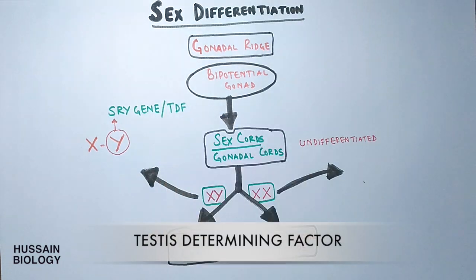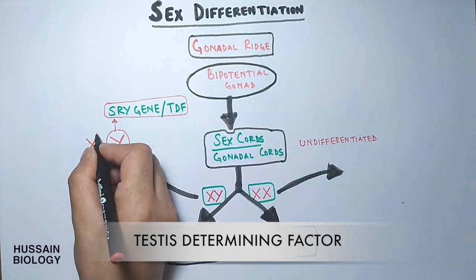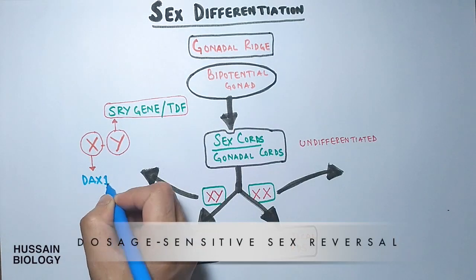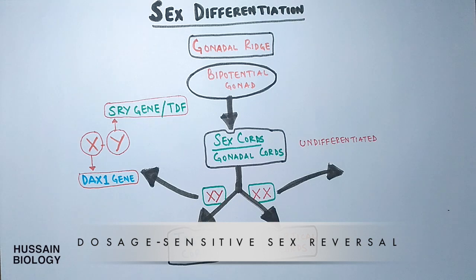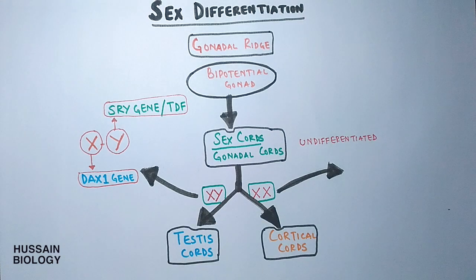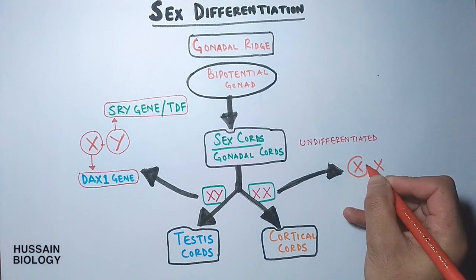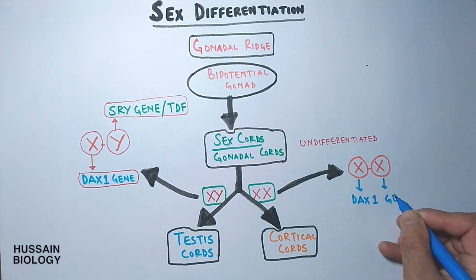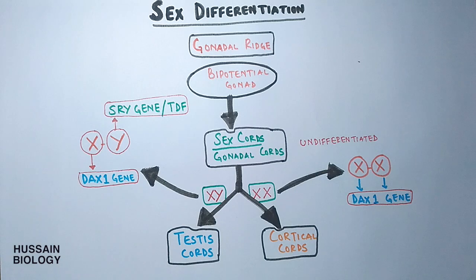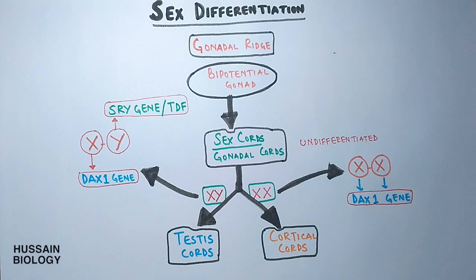SRY is also called TDF — testes determining factor. The X chromosome carries the DAX1 gene. Both SRY and DAX1 influence sex differentiation, but SRY defines the male — it is the SRY gene that makes an individual male — while DAX1 does not contribute to male factors. In the XX condition, both chromosomes express the DAX1 gene, and it is the presence of two copies of DAX1, combined with the absence of the Y chromosome, that causes the condition to turn female.